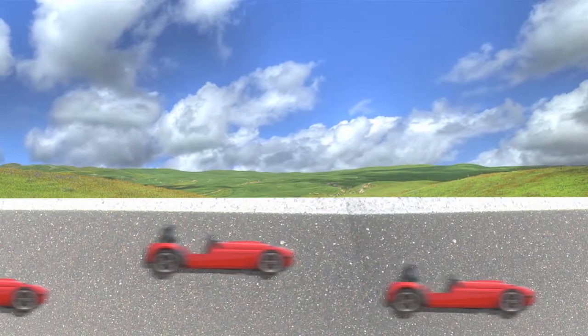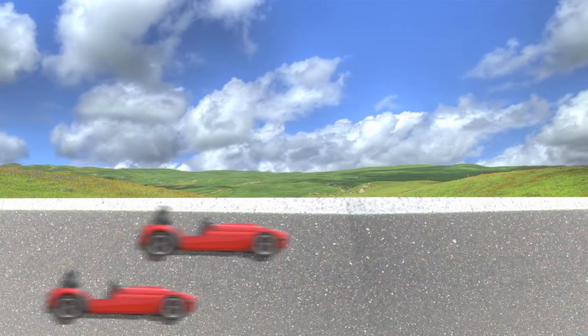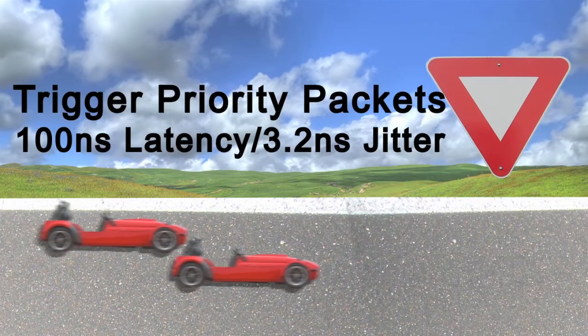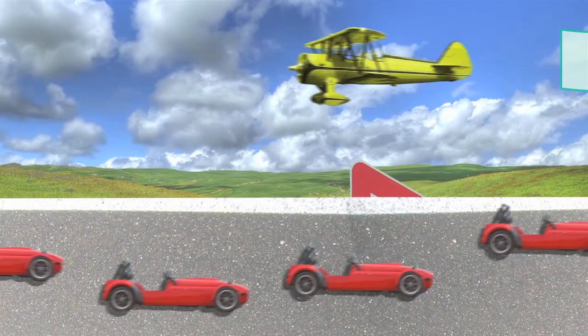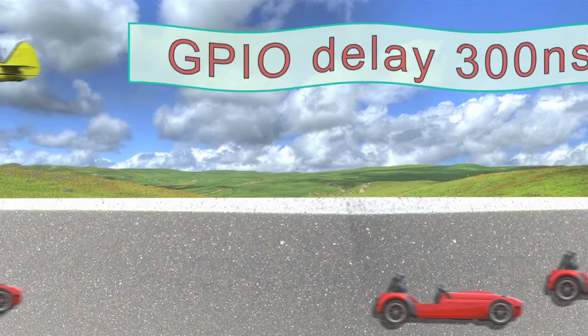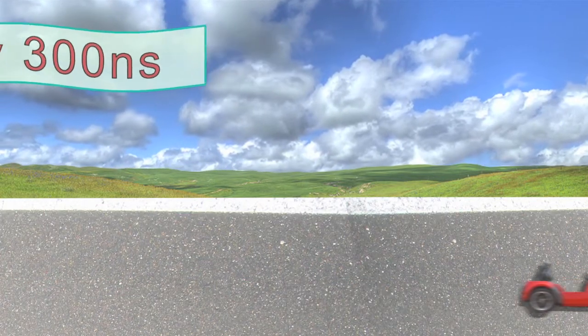Like CameraLink, CameraLink HS offers real-time trigger in the cable with a latency of about 100 nanoseconds and jitter of 3.2 nanoseconds. This is the best of any serial protocol.